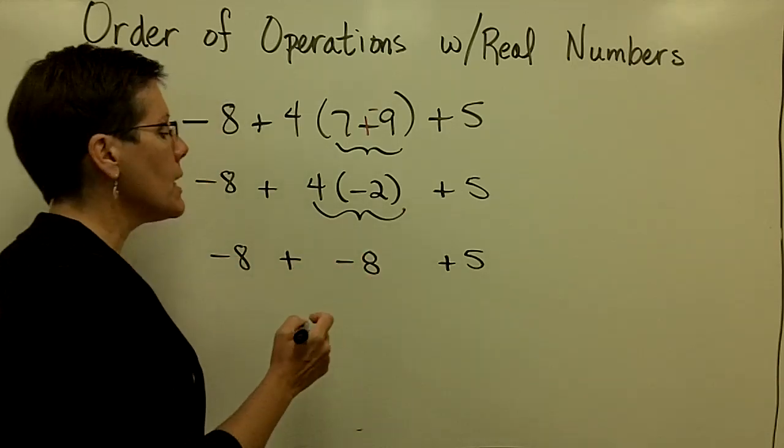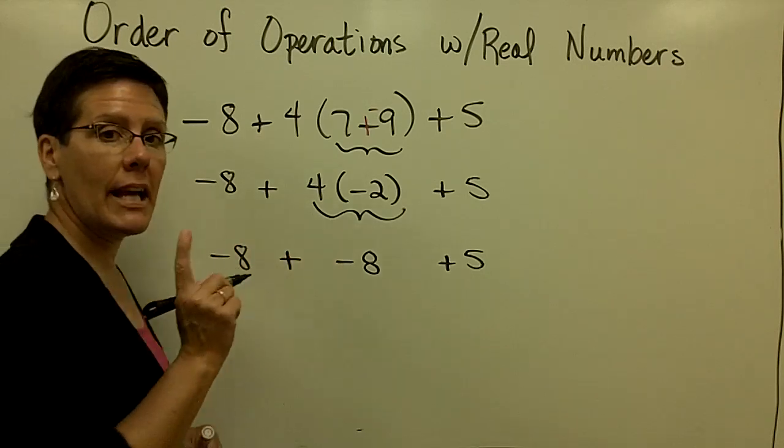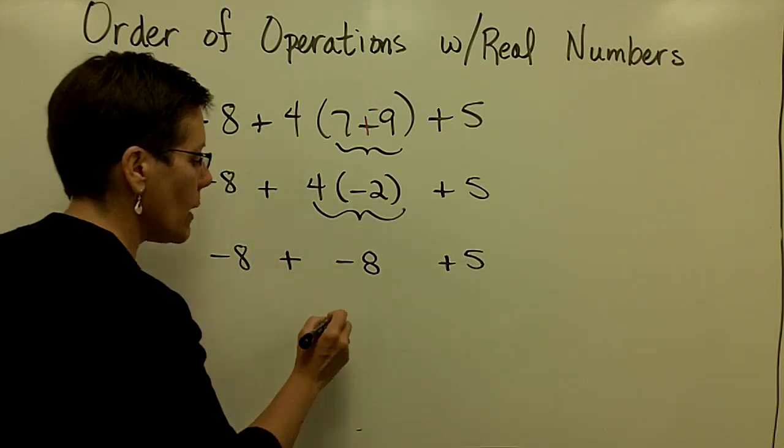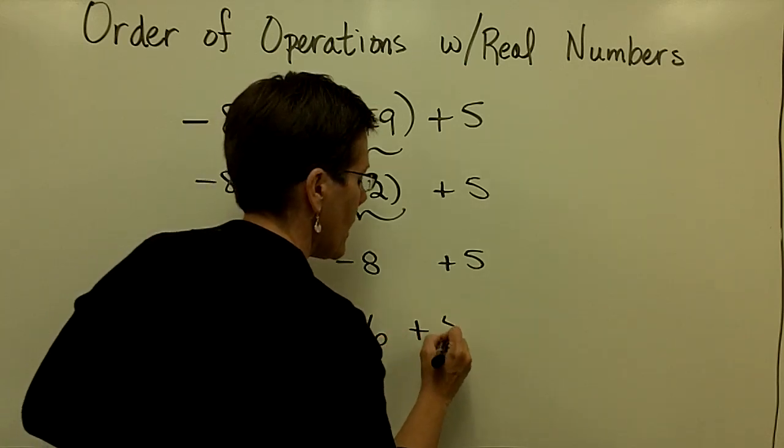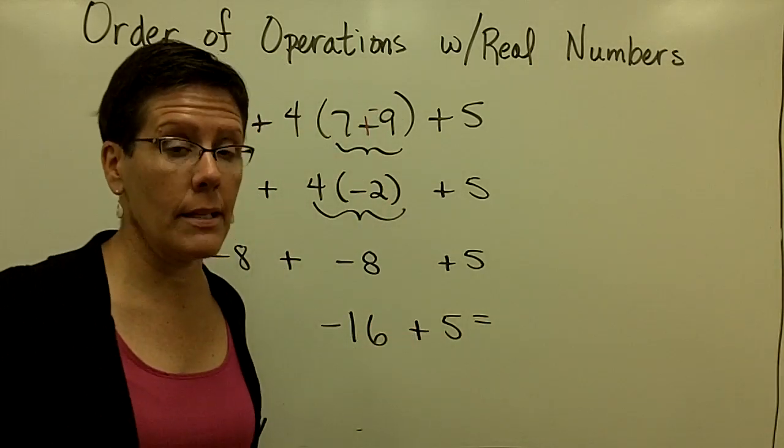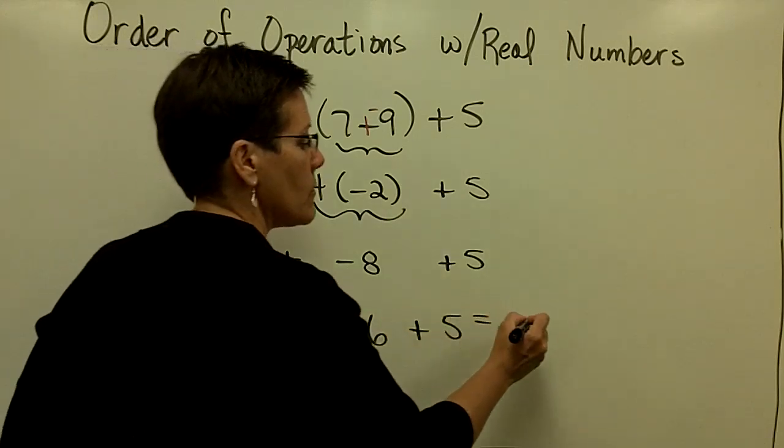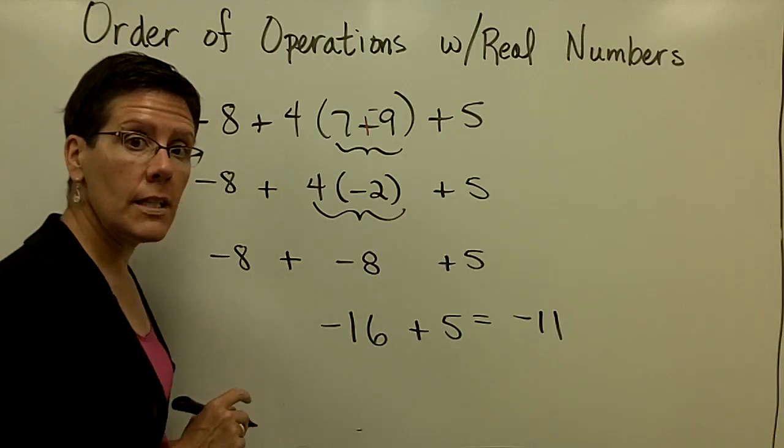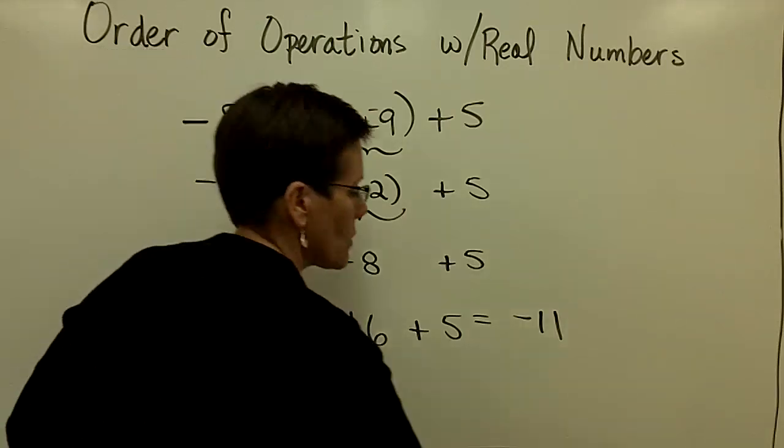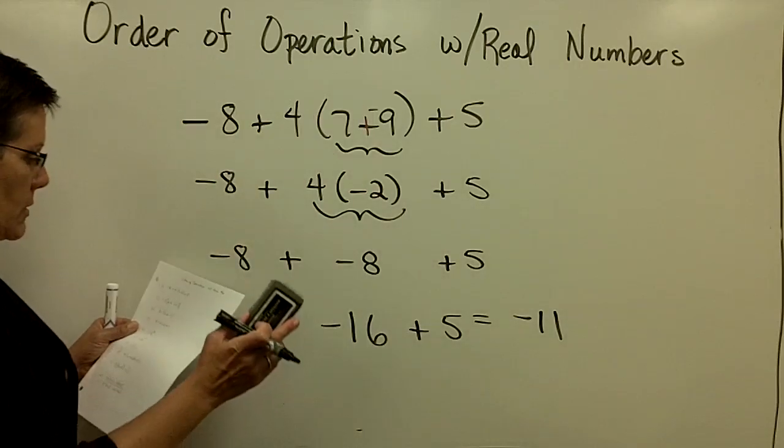I'm now going to work left to right and I'm going to add these two numbers that have like signs. So I add their absolute values getting 16. I put that common sign on them and then now I'm going to add those two numbers that have unlike signs. So I'm going to subtract their absolute values and get 11 and put the sign from the 16 because it has more pull or it has the greater absolute value. Let's do another one.